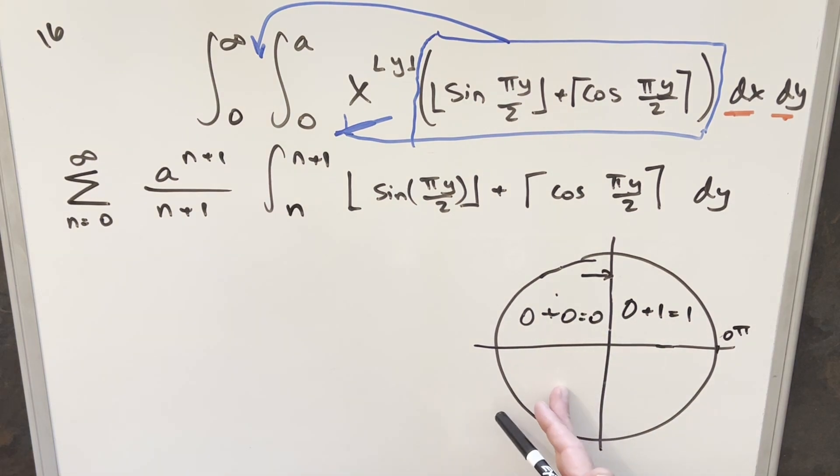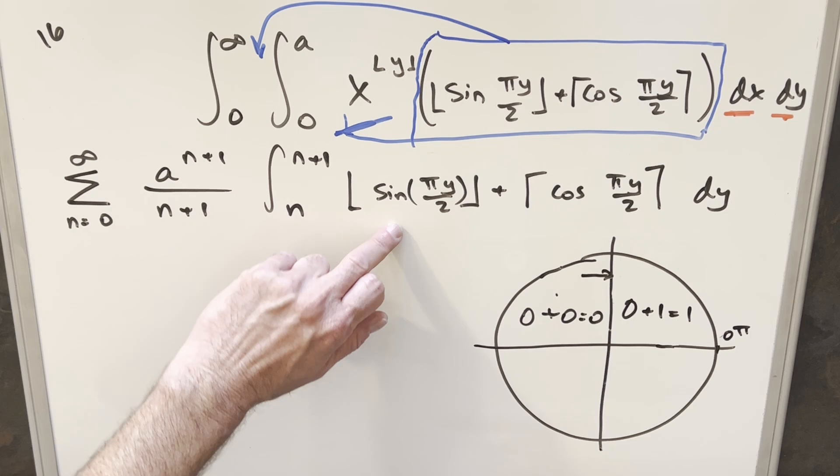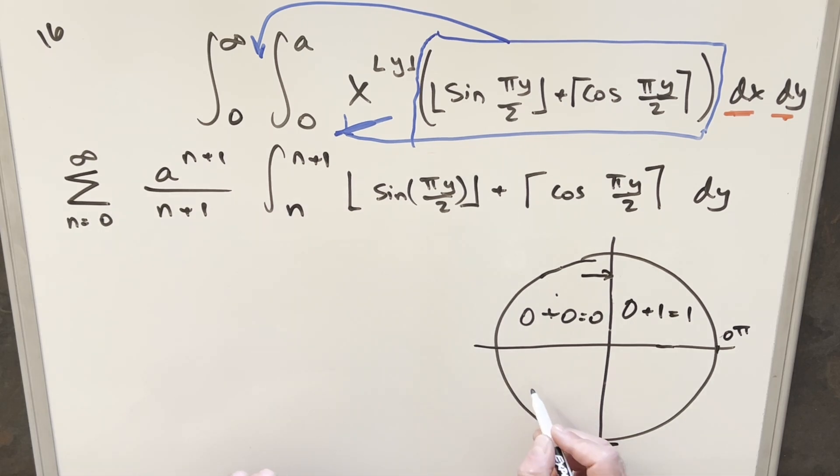Doing the same kind of thing in the third quadrant when n equals two, sine gets rounded down to here to minus one and cosine just gets rounded up to zero. So this part's going to be a minus one. And then when n is three, in the fourth quadrant, sine gets rounded down to minus one. Cosine is going to get rounded up to one. One minus one is zero.